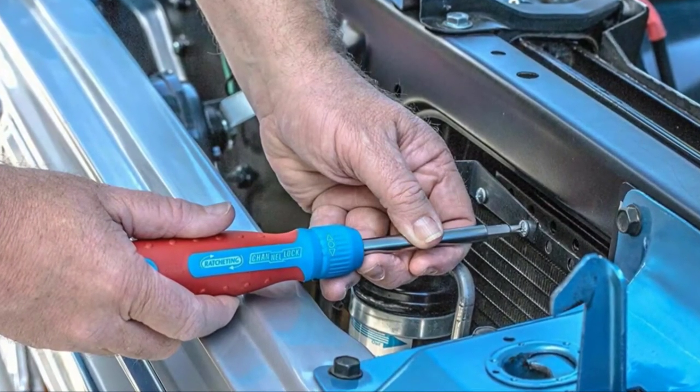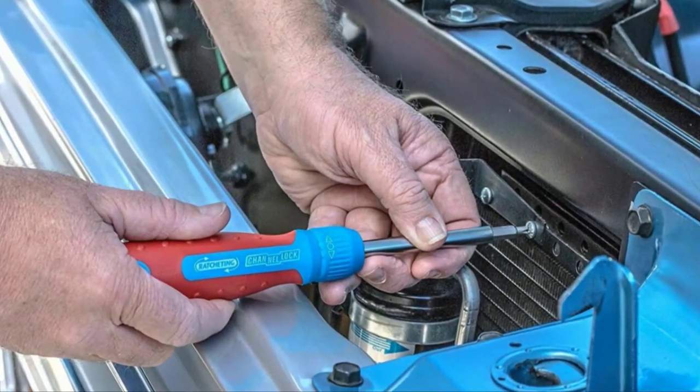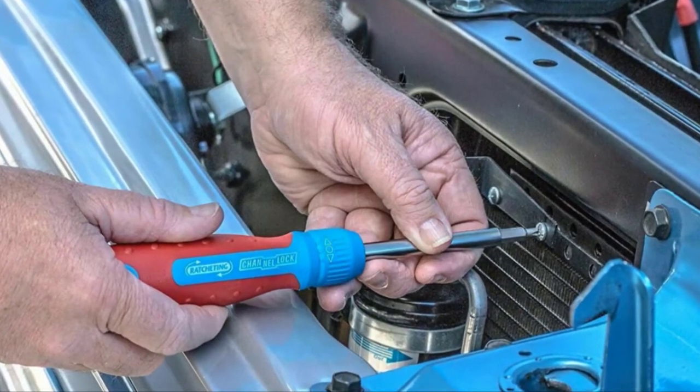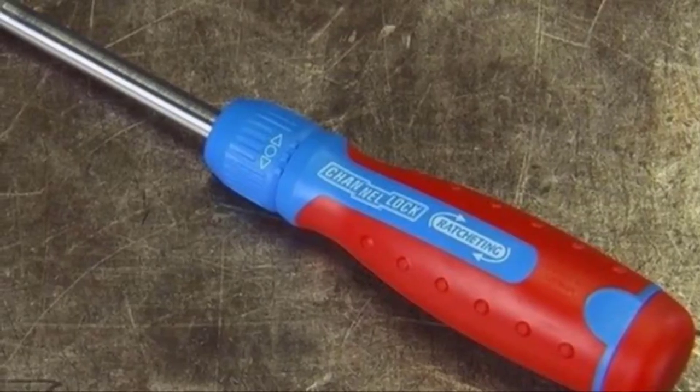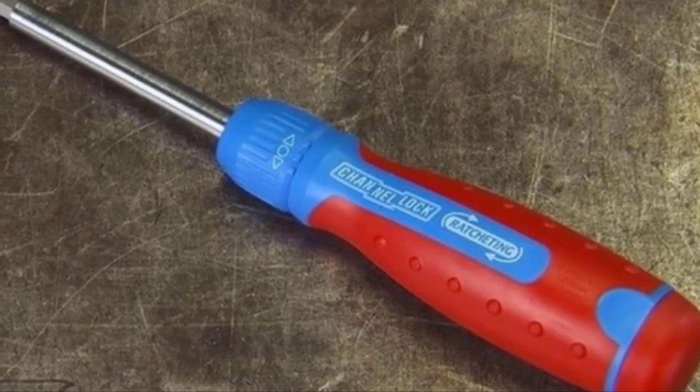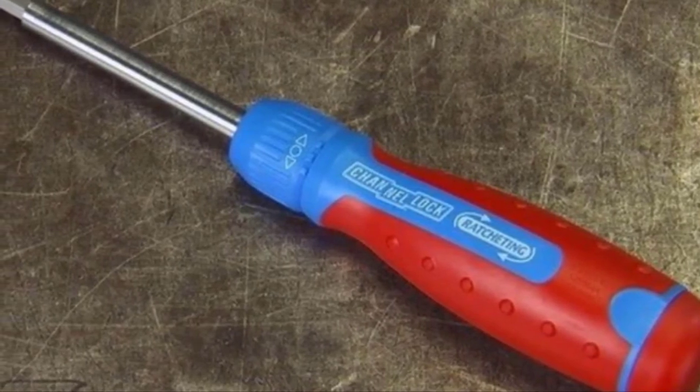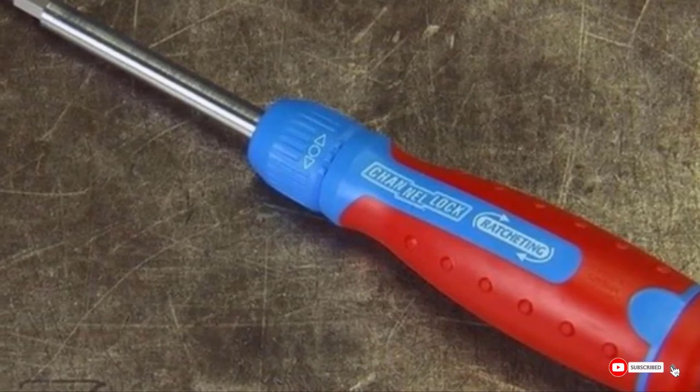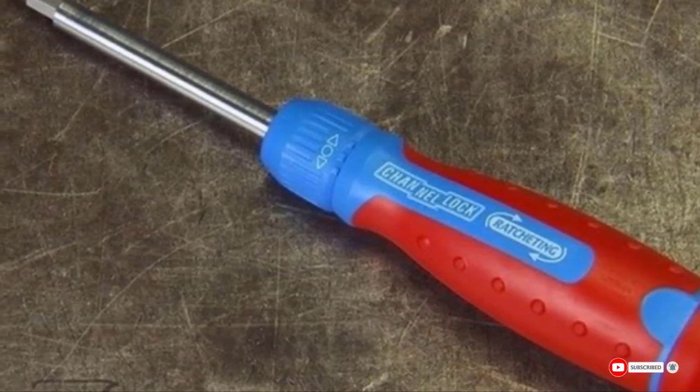The storage compartment in the handle stores the bit set and makes the 13 bits easily accessible and difficult to lose. The screwdriver shaft is quarter-inch. Some buyers have reported that the bits may wear out too soon. Also make sure you can work with the length of the shaft. It may be too long to get into some areas easily.